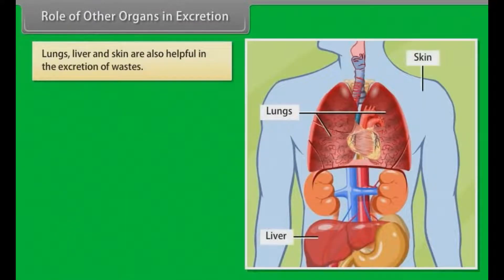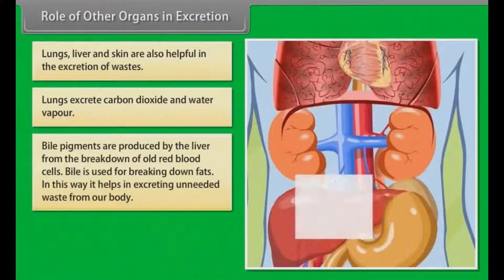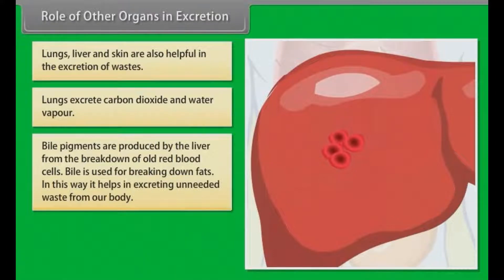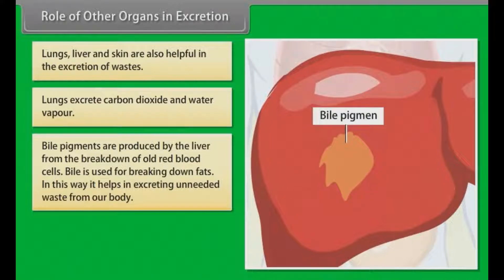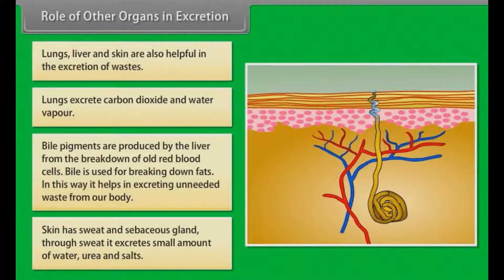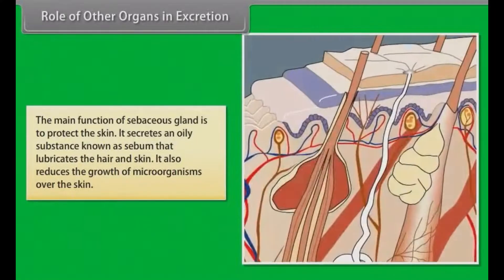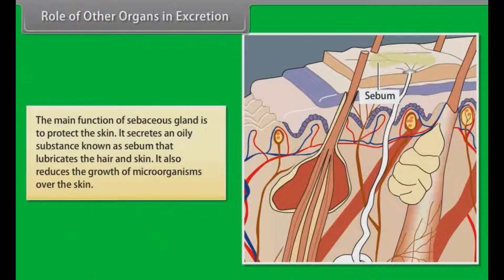Role of other organs in excretion. Lungs, liver and skin are also helpful in the excretion of wastes. Lungs excrete carbon dioxide and water vapour. Bile pigments are produced by the liver from the breakdown of old red blood cells; bile is used for breaking down fats, helping to excrete unneeded waste from the body. Skin has sweat and sebaceous glands. Through sweat, it excretes small amounts of water, urea and salts. The main function of sebaceous glands is to protect the skin; they secrete an oily substance called sebum that lubricates the hair and skin and reduces the growth of microorganisms on the skin.